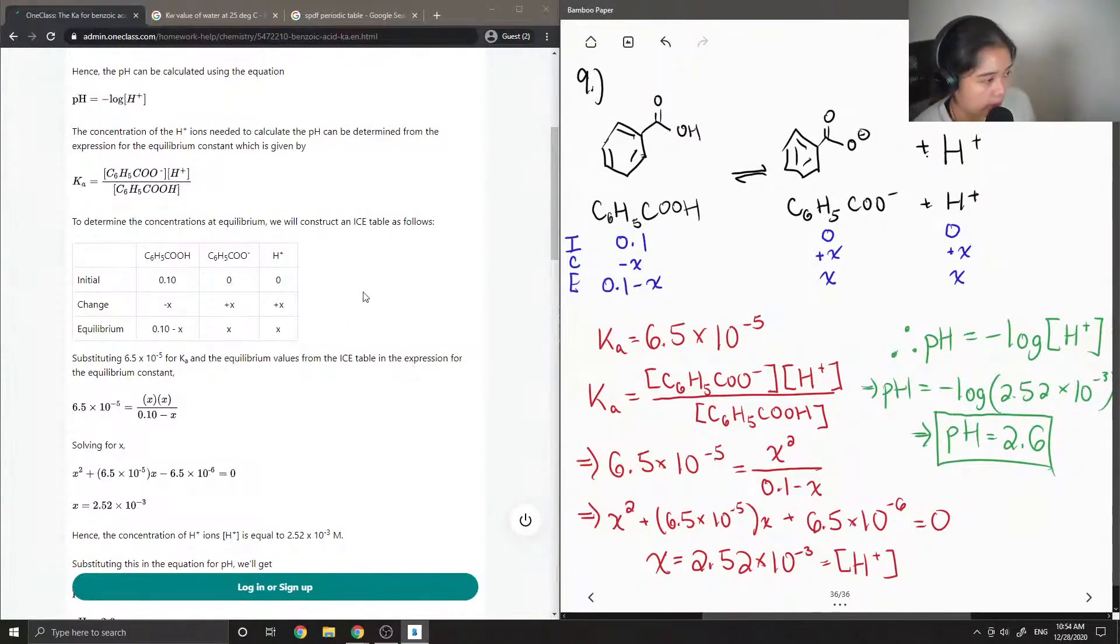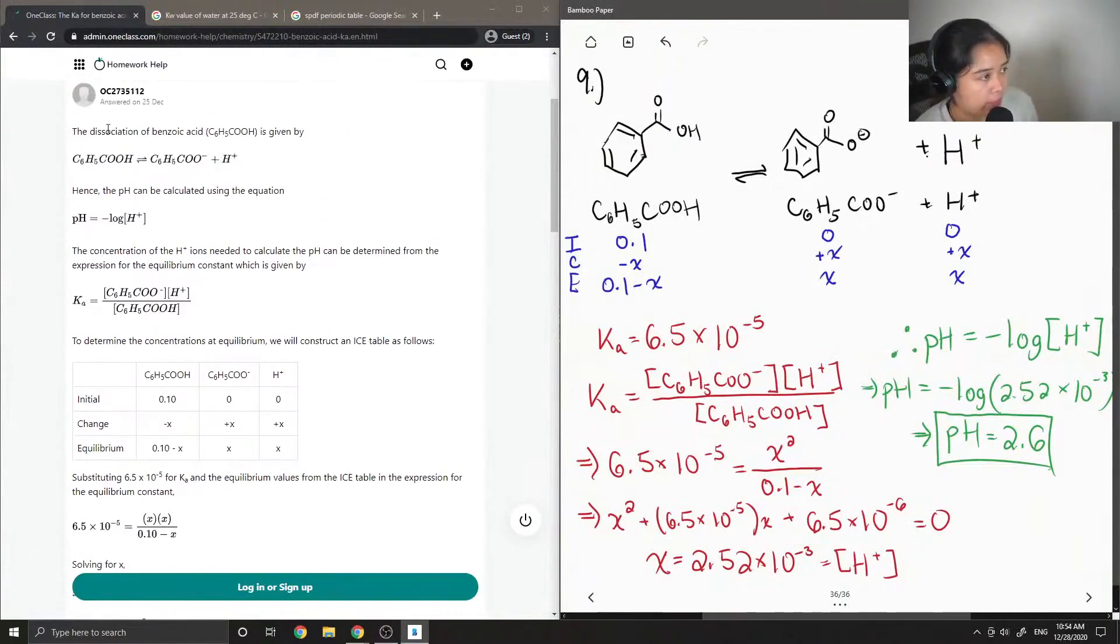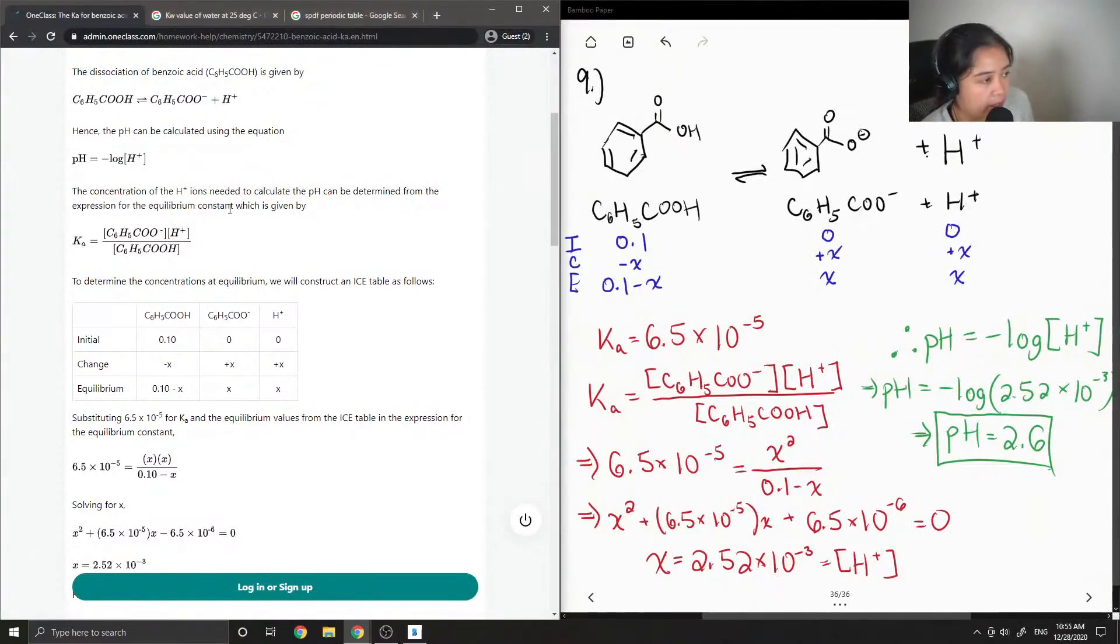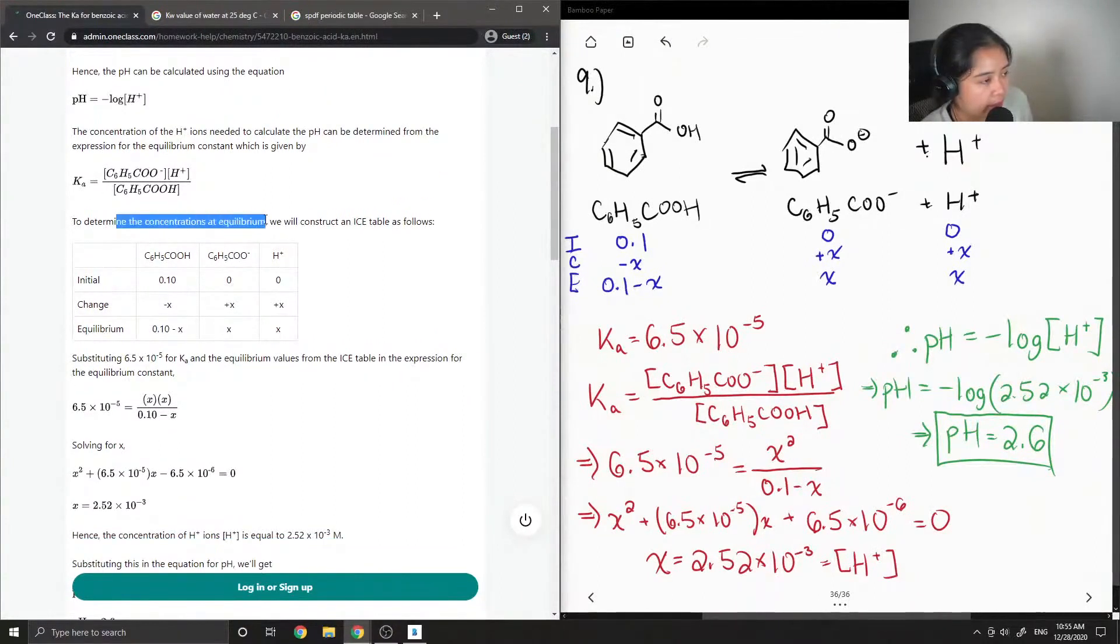Okay, so let's see what the tutor said. The dissociation of benzoic acid is given by C6H5COOH, which produces C6H5COO minus plus H plus. Hence, the pH can be calculated using the equation pH is equal to negative log of the concentration of H plus. Concentration of the H plus ions needed to calculate the pH can be determined from the expression for the equilibrium constant, which is given by Ka.